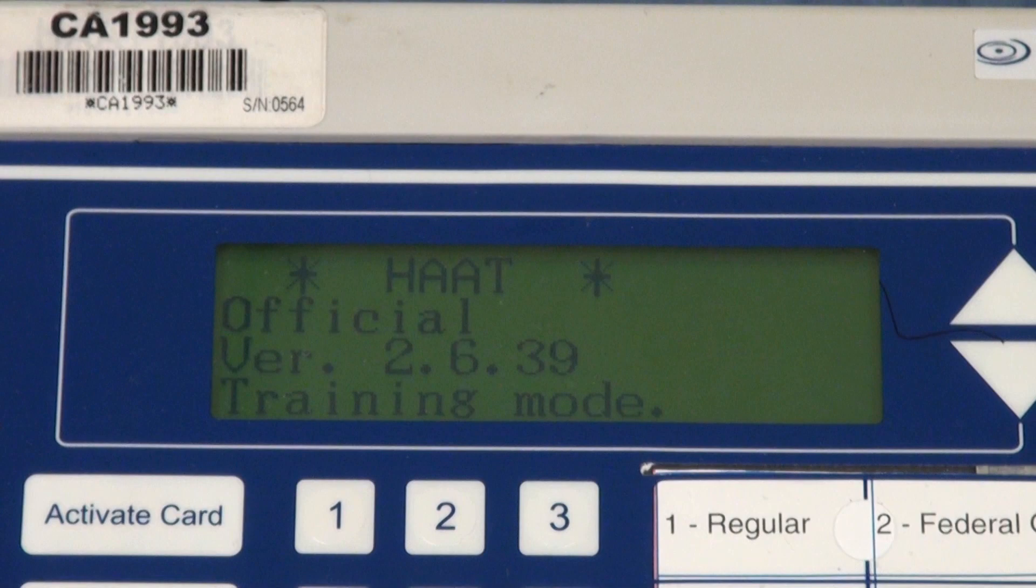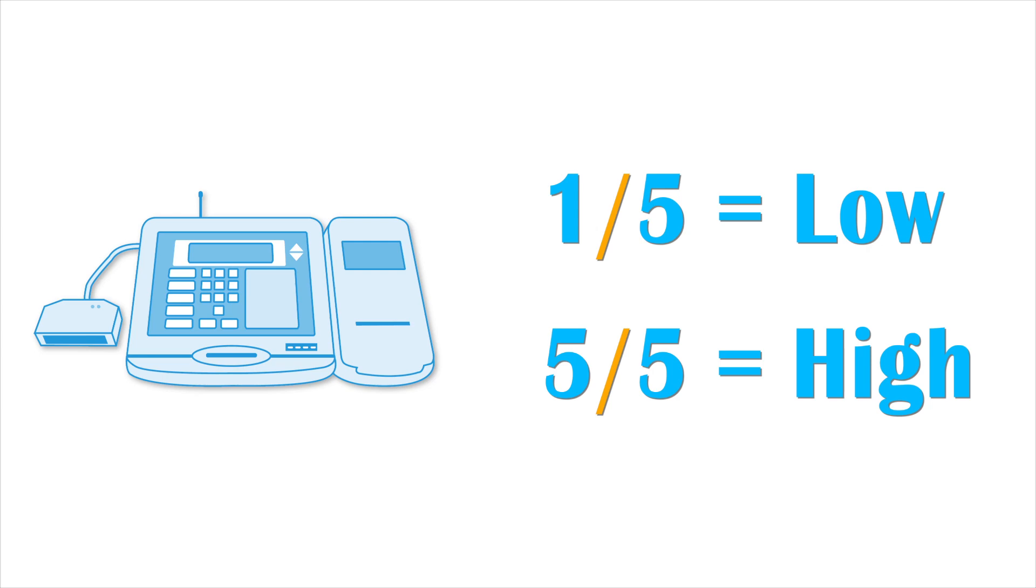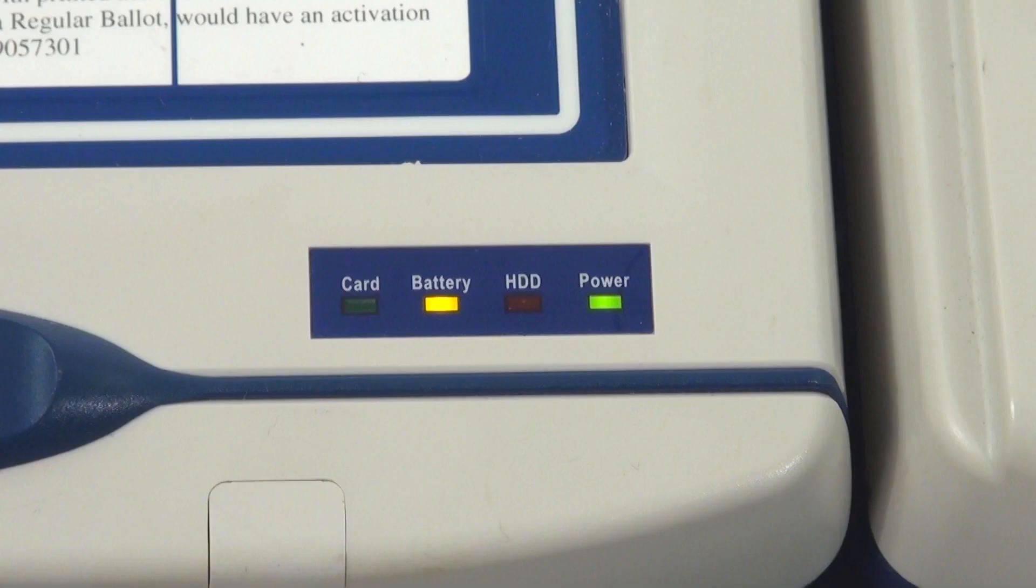Now that you have successfully consolidated the results of all your equipment, you are now ready to move to the transmission phase. Check the signal strength on the card activator. If the signal is weak, move to a window or upstairs for a stronger signal. The card activator has a battery, so it can be unplugged for a short period of time.